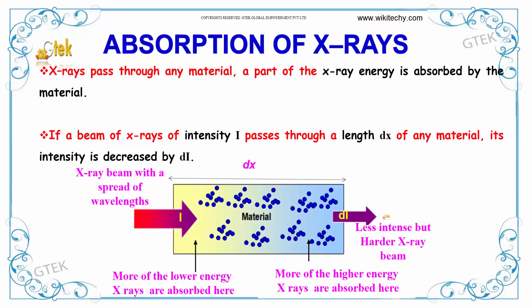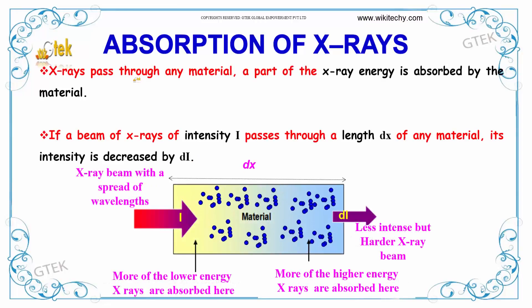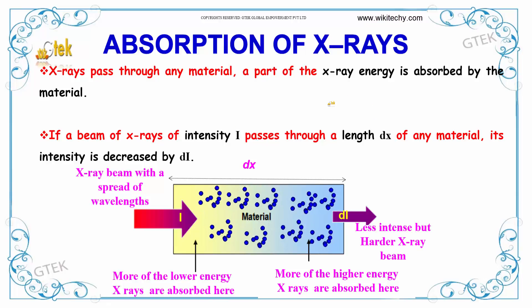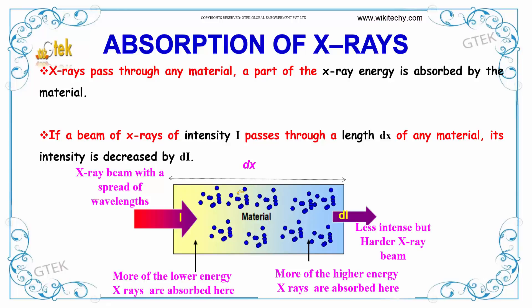If we talk about absorption of X-rays, X-rays pass through any material, and a part of the X-ray energy is absorbed by the material. If a beam of X-ray of intensity i passes through a length dx of any material, its intensity is decreased by di.